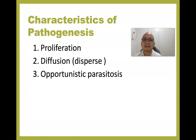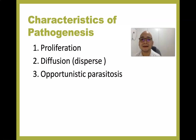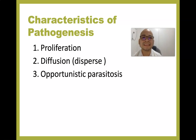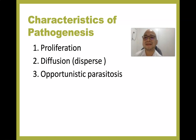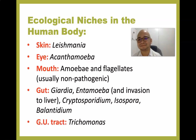The characteristic of pathogenesis includes proliferation — the ability to multiply — and diffusion or dispersal within the body system of the host. Some parasites are capable of opportunistic parasitosis: coccidian parasites such as Toxoplasma, Isospora, and Cryptosporidium normally infect people with weakened immune systems.